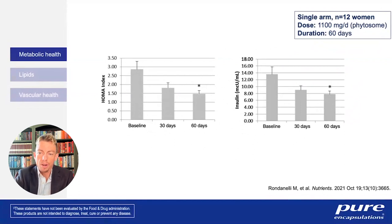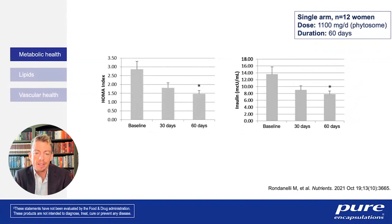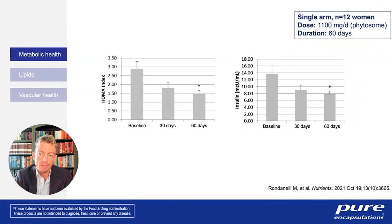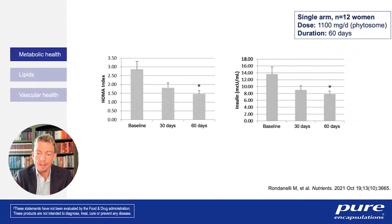A single-arm study of 12 women used a form of berberine that's better absorbed than standard forms. The HOMA index, which measures how well insulin is working, showed significant benefit after 60 days of supplementation with this phytosome. There was also an improvement in the amount of insulin being produced. So maintaining healthy insulin levels is another potential benefit of berberine based on this small study.